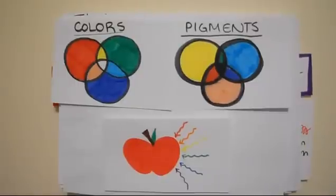In order to understand colors and pigment, you should understand that absorption is when a wavelength is taken in by the object, and reflection is when the wavelength bounces off the object.